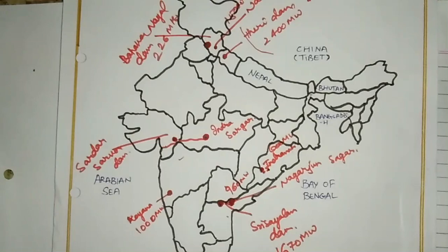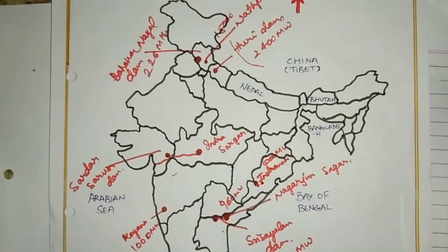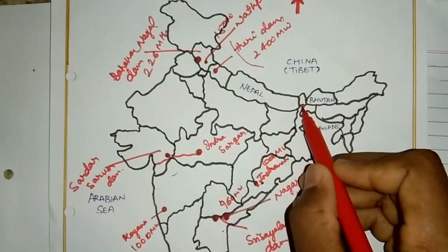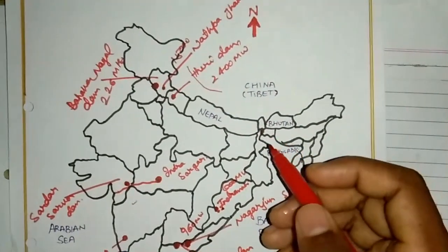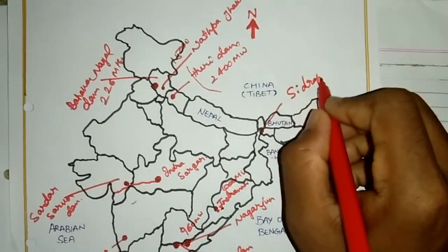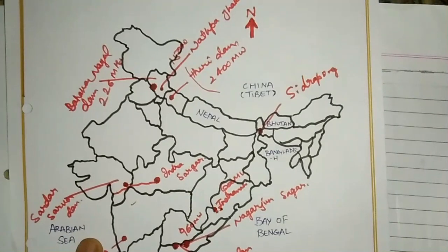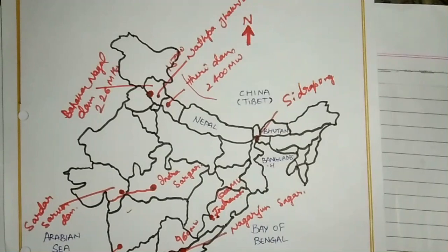The first hydropower plant in India is located in West Bengal. It is called Sidhu Rangpong and produces 130 MW of electricity. This was established in 1897 and is one of the important dams and hydropower plants, also serving tea producers in offices and factories.